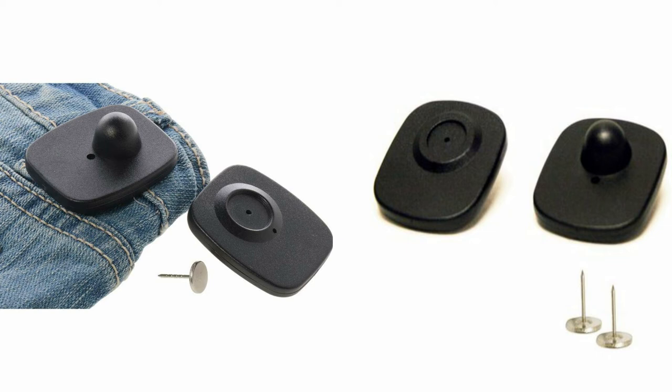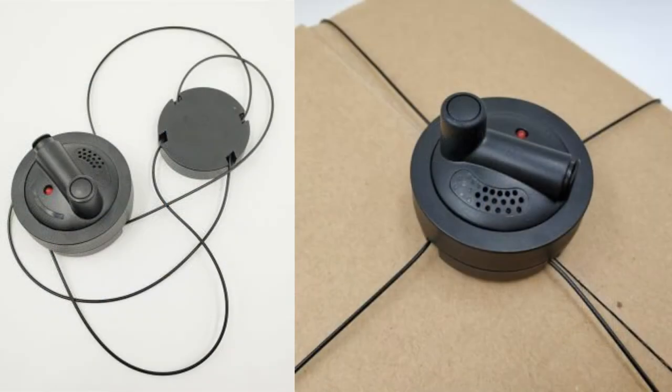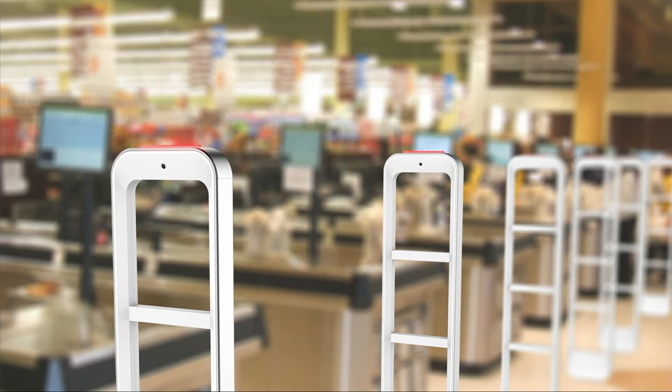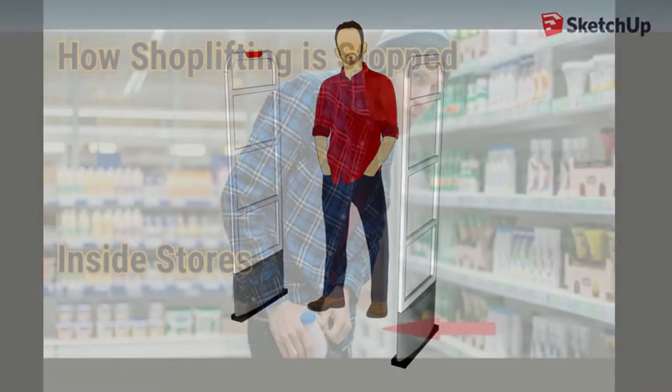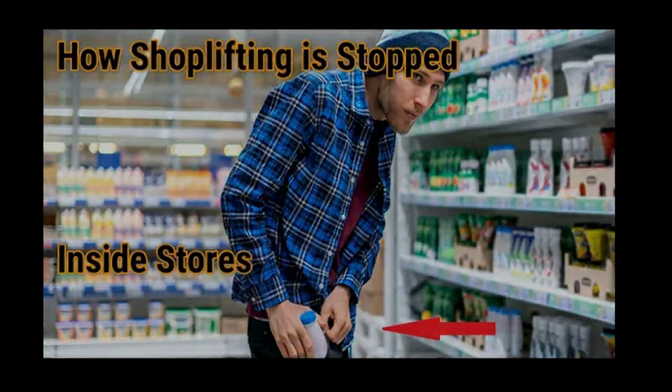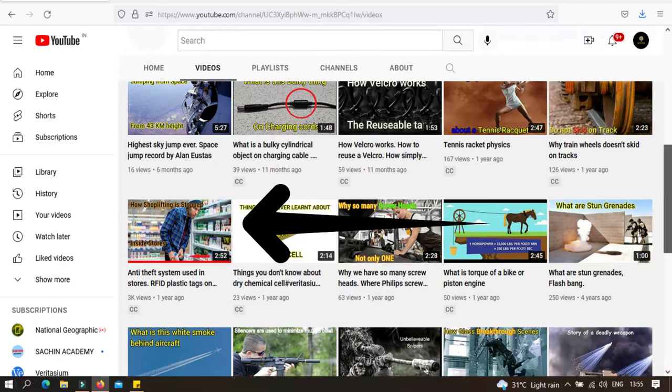This small plastic tag is found on almost all items in a supermarket. It serves as an anti-theft system, as we have already discussed in our previous video. Do check out that video if you haven't yet.